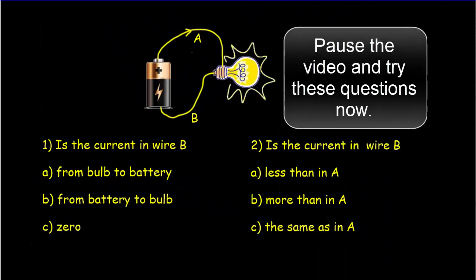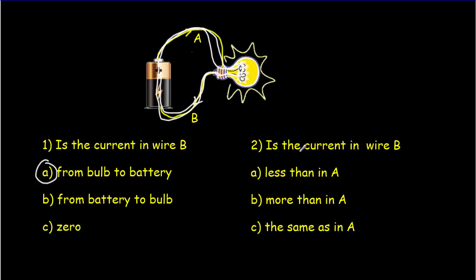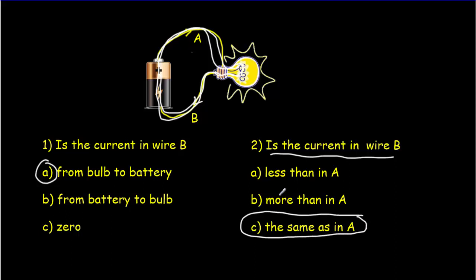Here's a simple circuit with a battery and a light bulb — two questions. Pause the video, try the question, then come back. The current in the bottom wire would be from the bulb to the battery — answer A — because the charges have to move around in a complete cycle, moving around and around. Is the current in wire B less than, more than, or the same? It's the same, because current doesn't get used up — it's just the energy that gets used up. So the current will be exactly the same in B as in A.